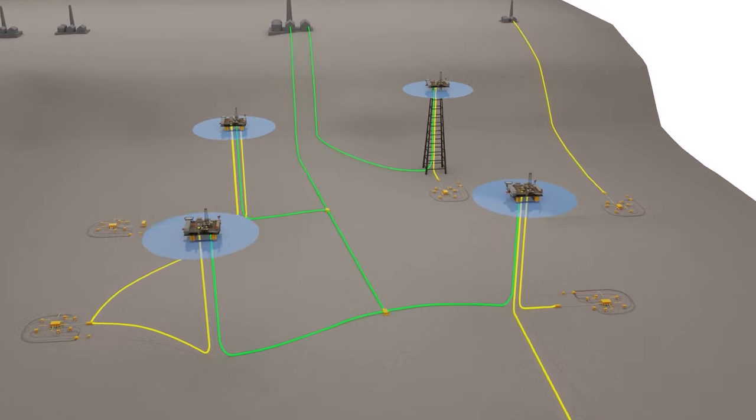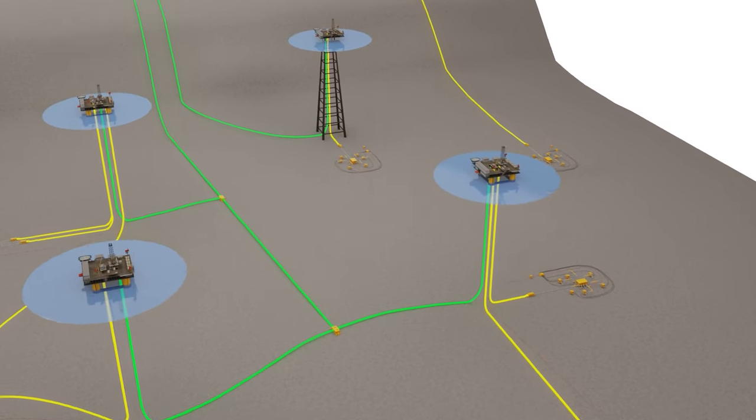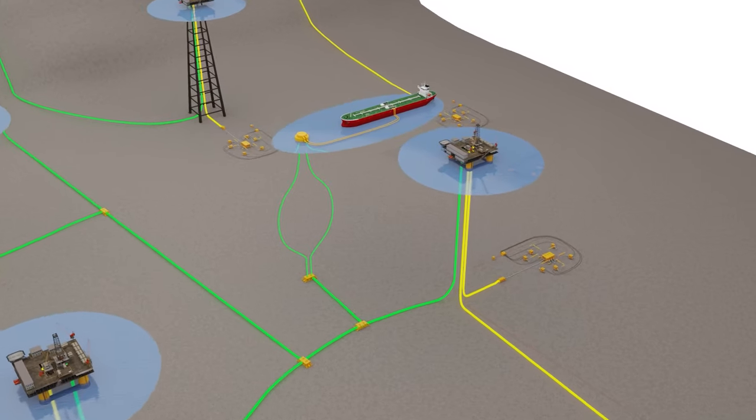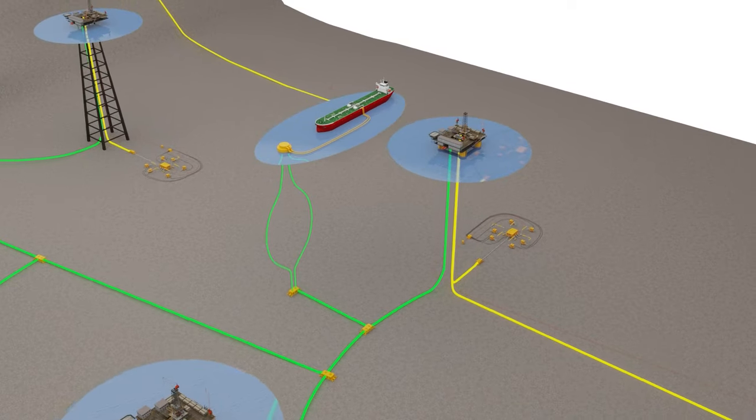Export pipelines not only transport oil to onshore facilities, they can also transport oil to FSO vessels and oil tankers.